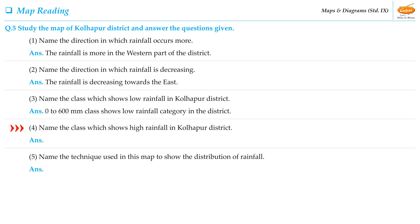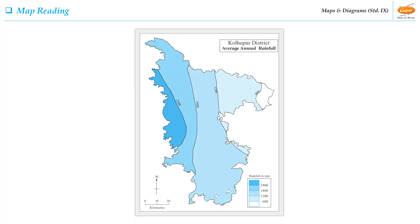The fourth question of the activity is: Name the class which shows high rainfall in Kolhapur district. More than 2,400mm — that is, the 2,400mm to 3,000mm class — shows the high rainfall category in the district.